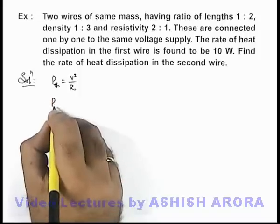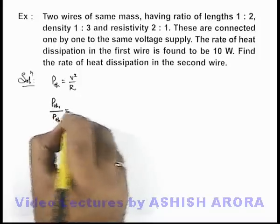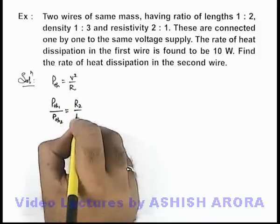So we can write thermal power in first wire upon thermal power in second wire. Since it is inversely proportional to R, it is R2 by R1.